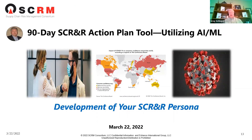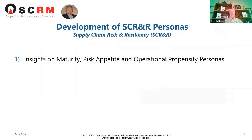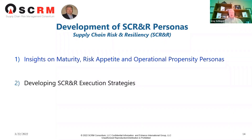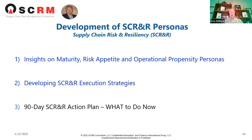Developing your supply chain risk and resiliency persona involves three elements: insights from our supply chain risk maturity model, your risk appetite, and what we call operational propensity personas. We'll discuss how the 90-day SCR&R action plan develops execution strategies, and especially share the action items that come out of the tool automatically.